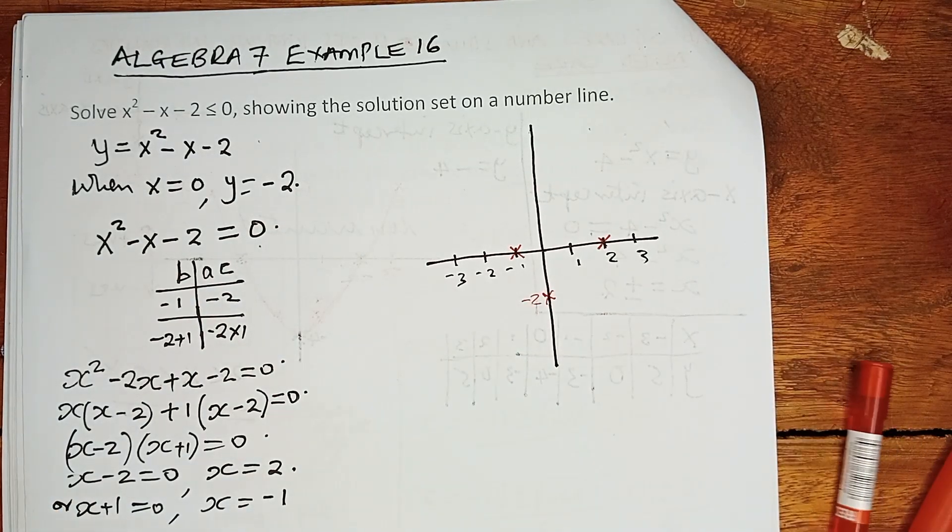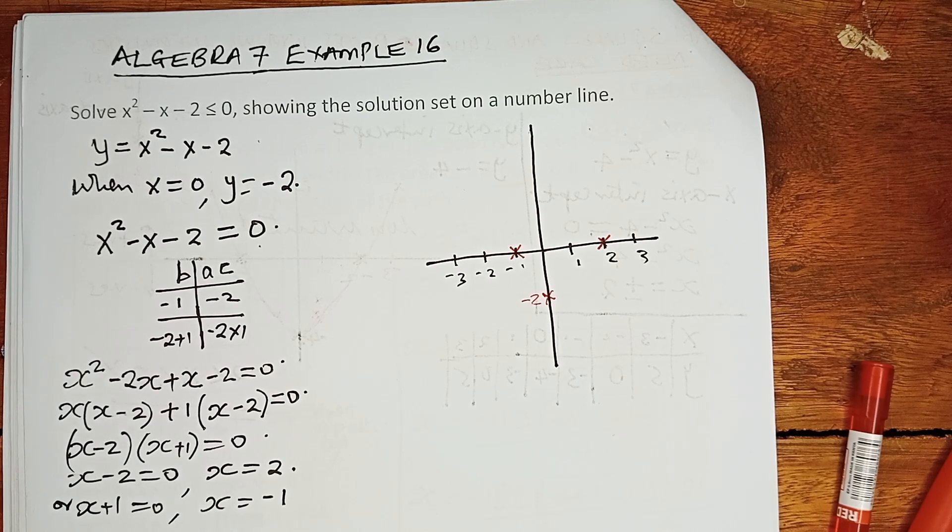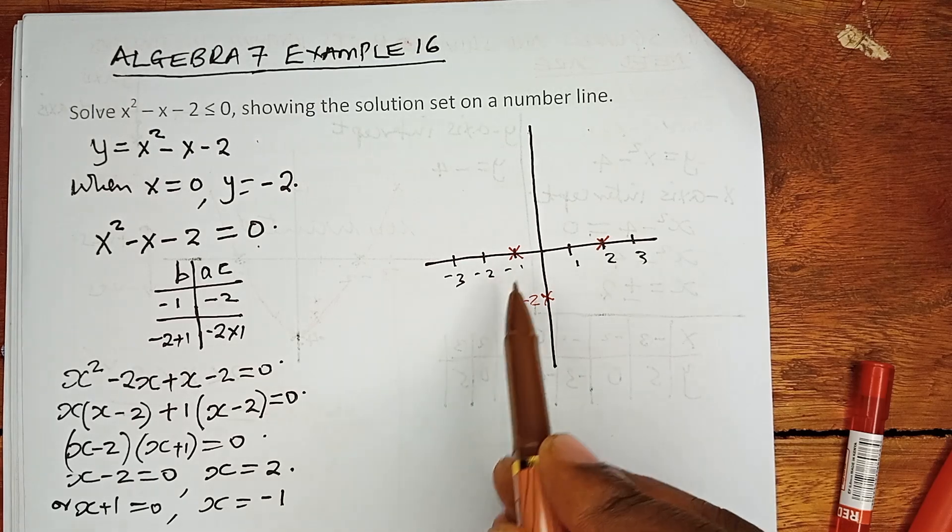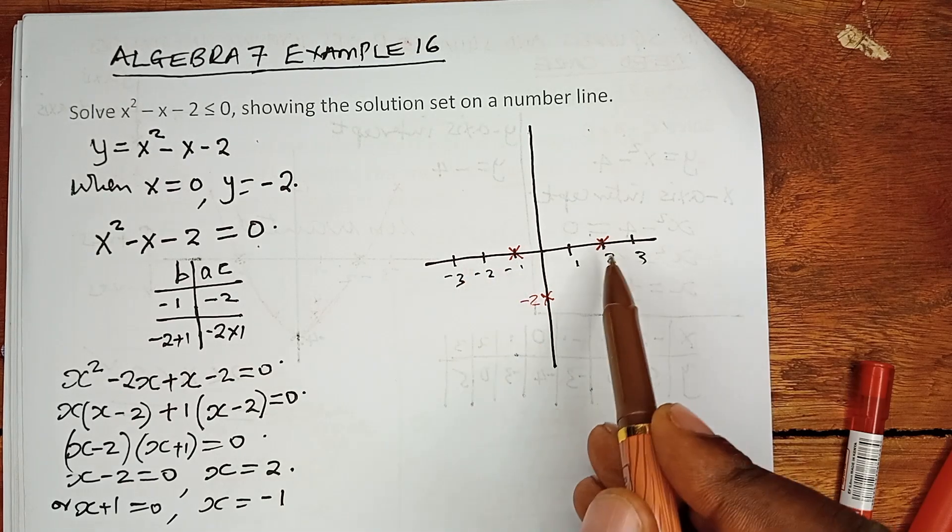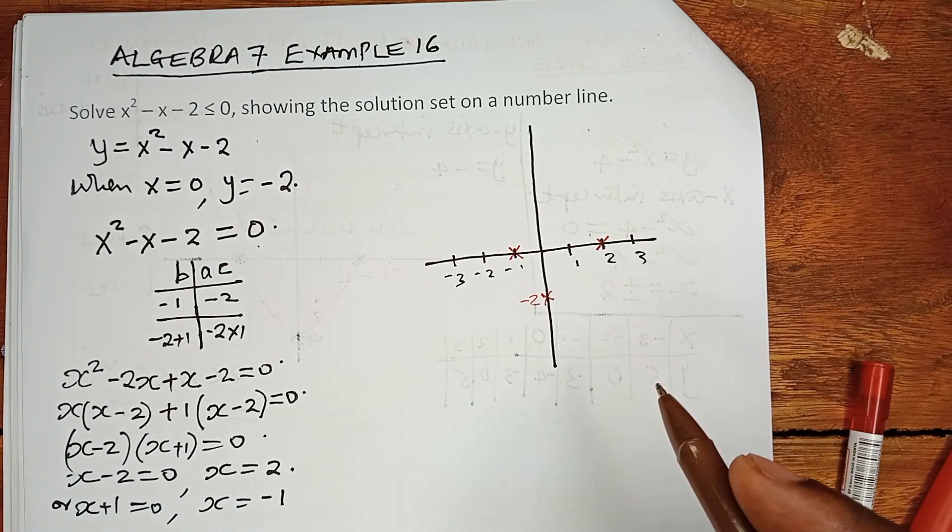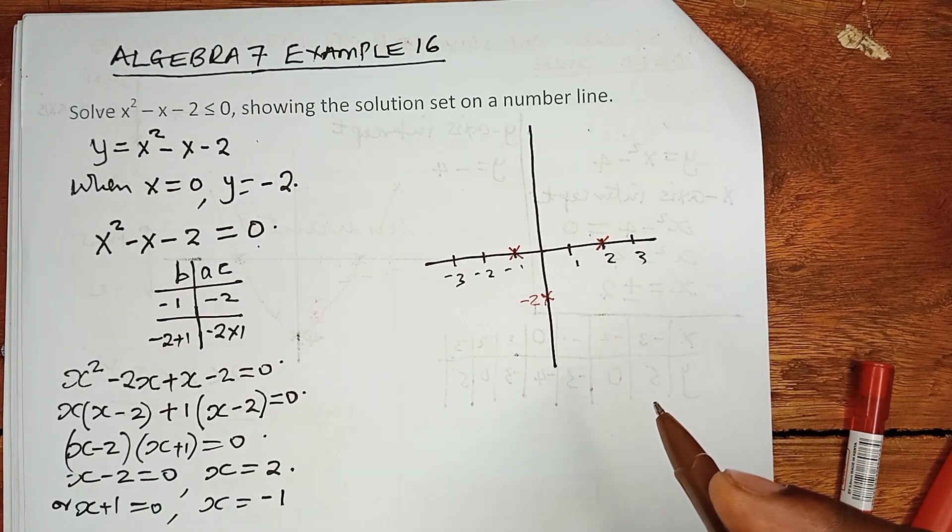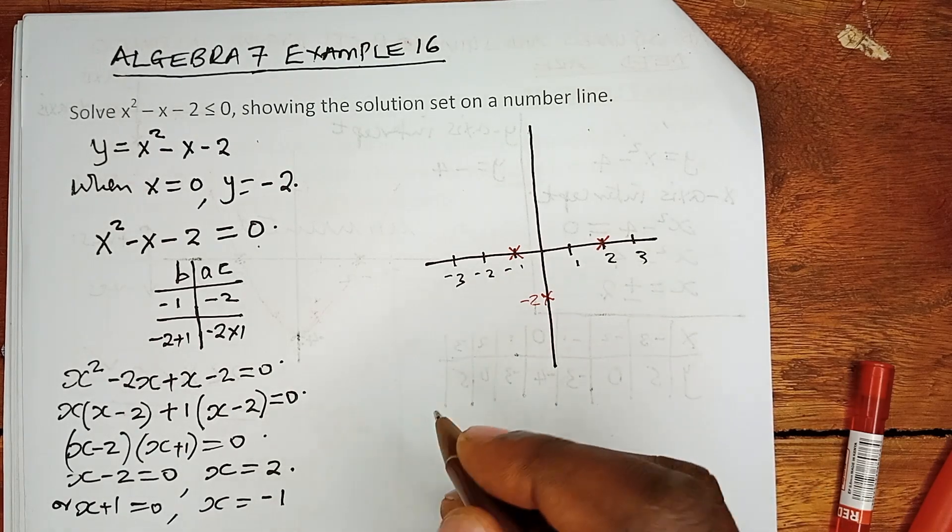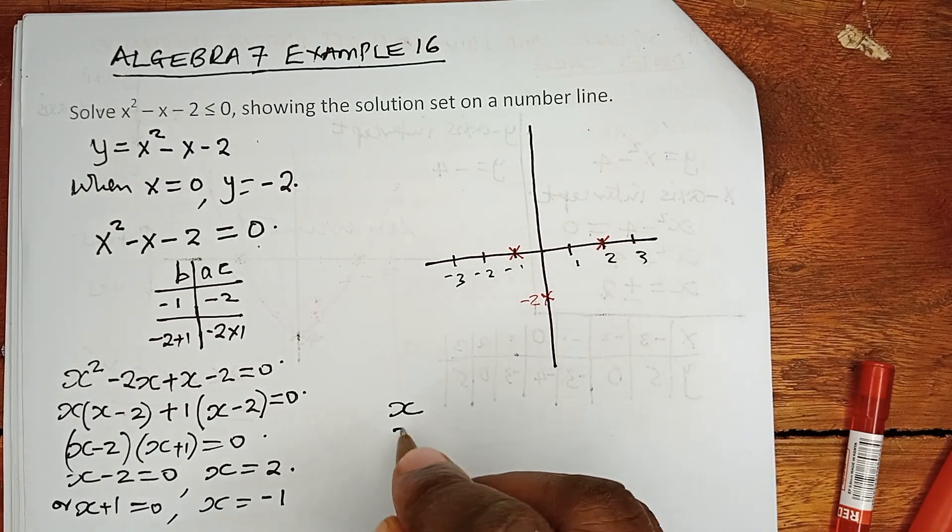So that we can understand the shape of the graph, it is important to take some points below negative 1 and above positive 2, so that we can seriously see how the graph is performing and behaving. So we are talking of x and y.